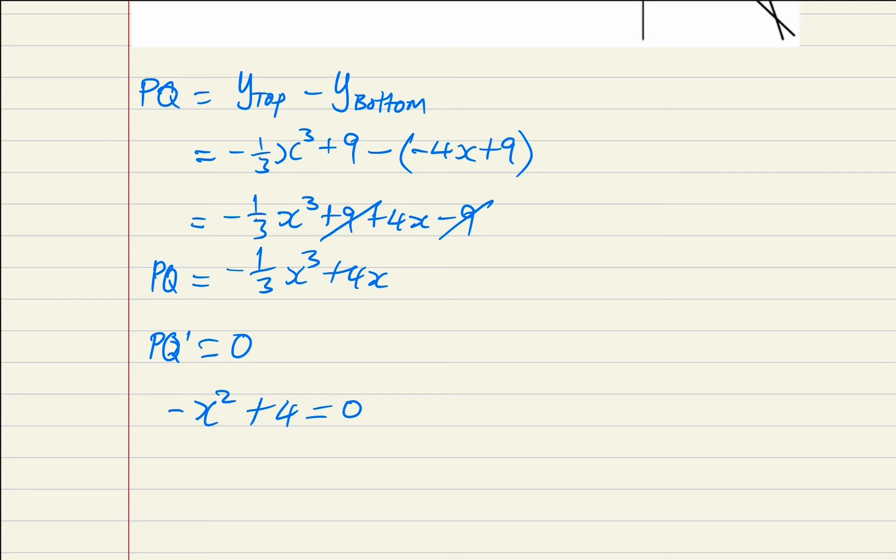How did I get this? When I say -1/3 multiplied by 3, it gives me -1. Then from here, I divide everything by -1. Hence, I'll have x² - 4 = 0.